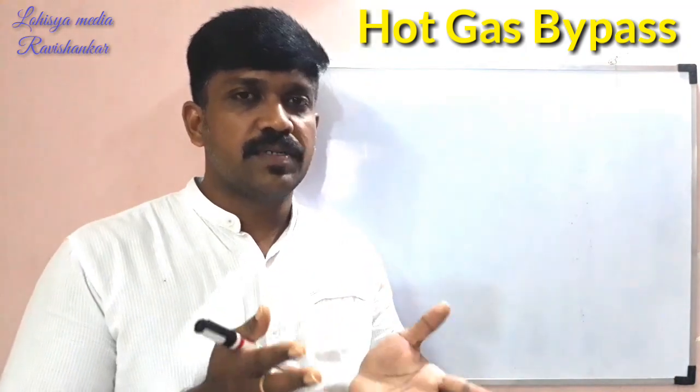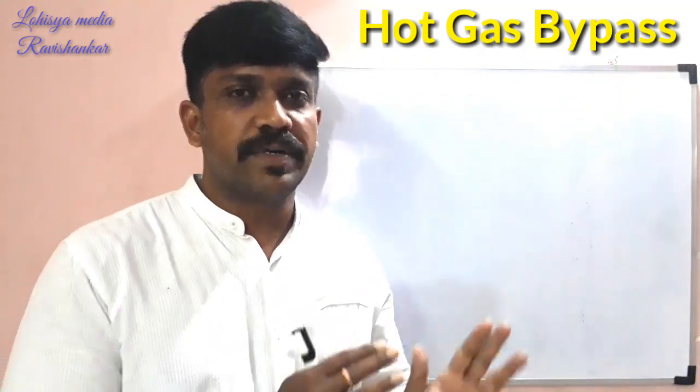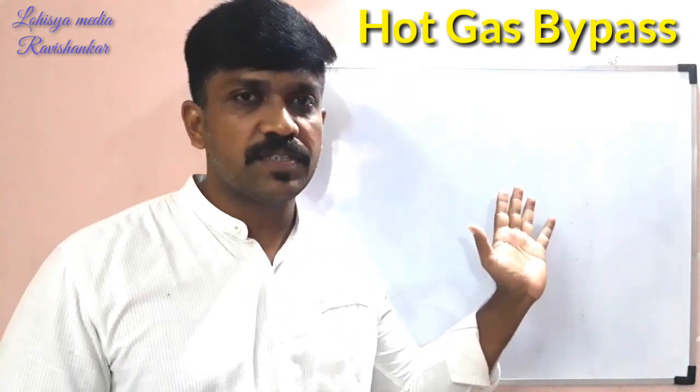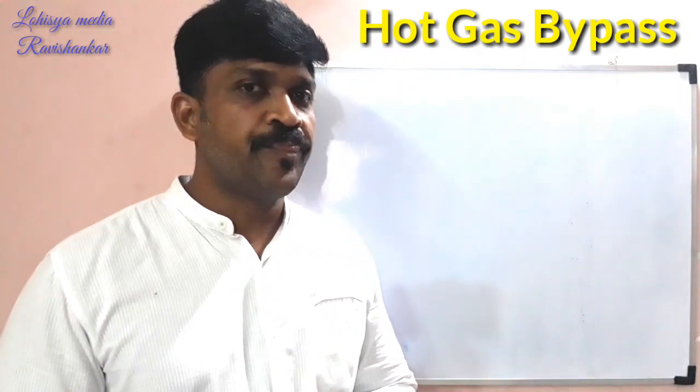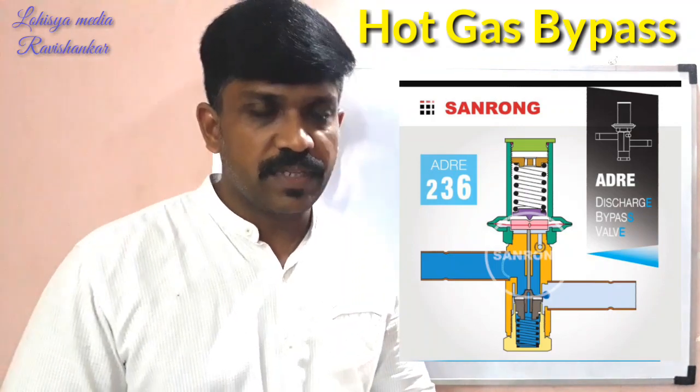We can use the hot gas bypass valve. We can use the name layer. Whether we can bypass the valve, we can use the main house. We can use the air dryers — a dry air dryer and a refrigerated air dryer. That is the concept of the hot gas bypass valve.